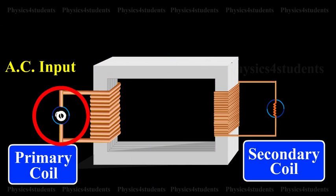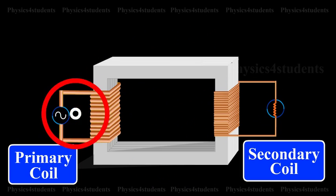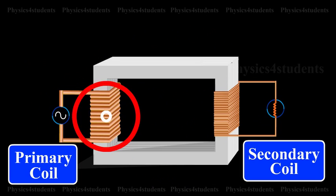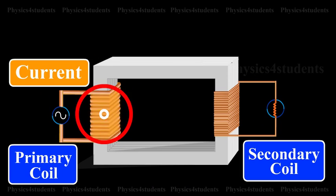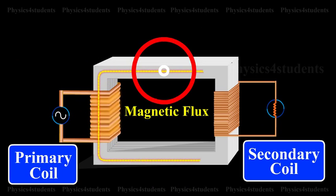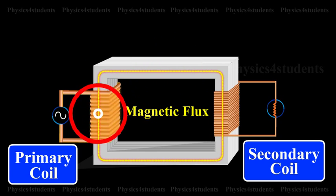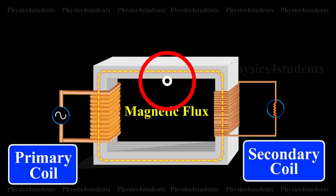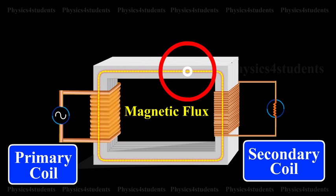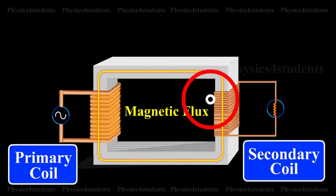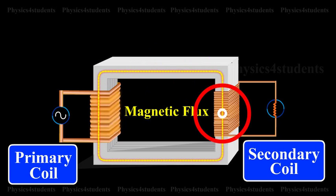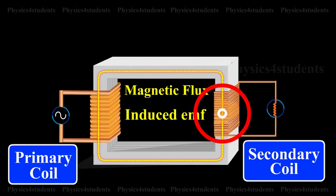The AC input is applied across the primary coil. The continuously varying current in the primary coil produces a varying magnetic flux in the primary coil, which in turn produces a varying magnetic flux in the secondary. Hence, an induced EMF is produced across the secondary.